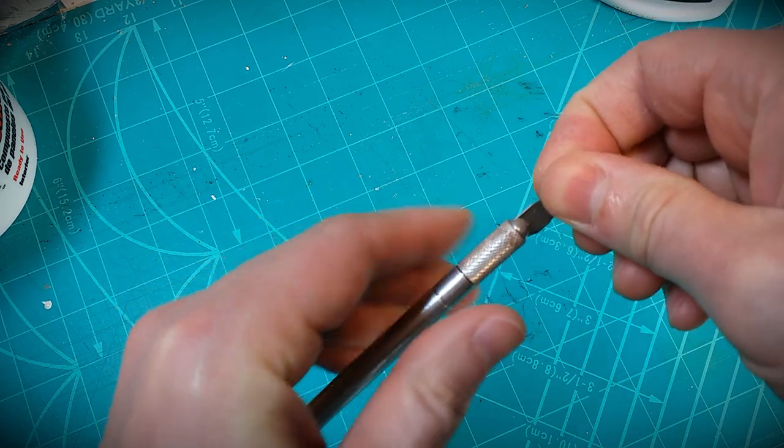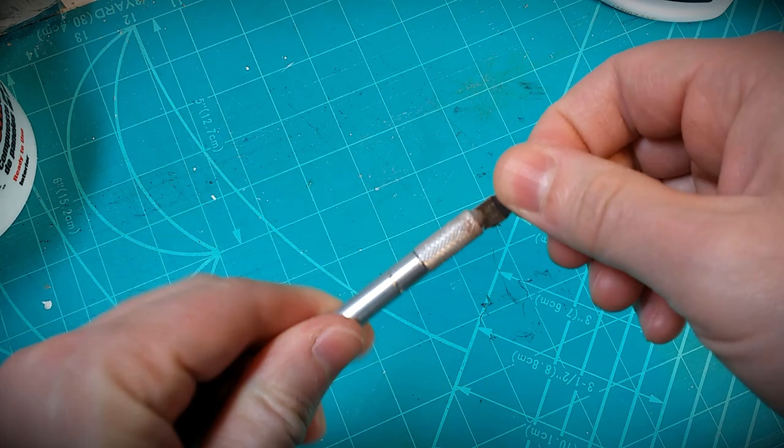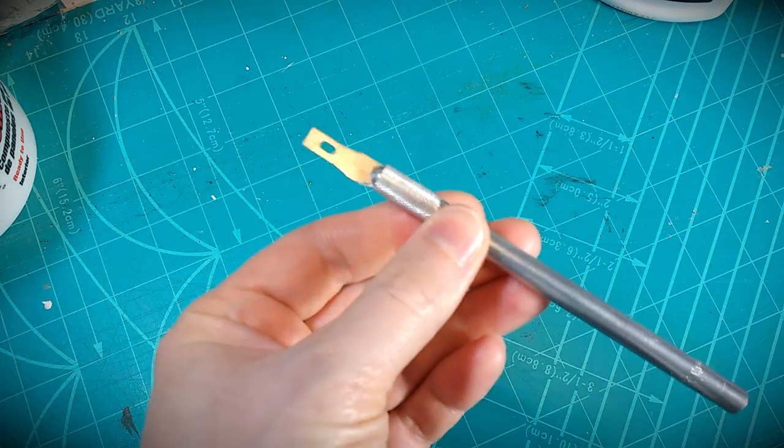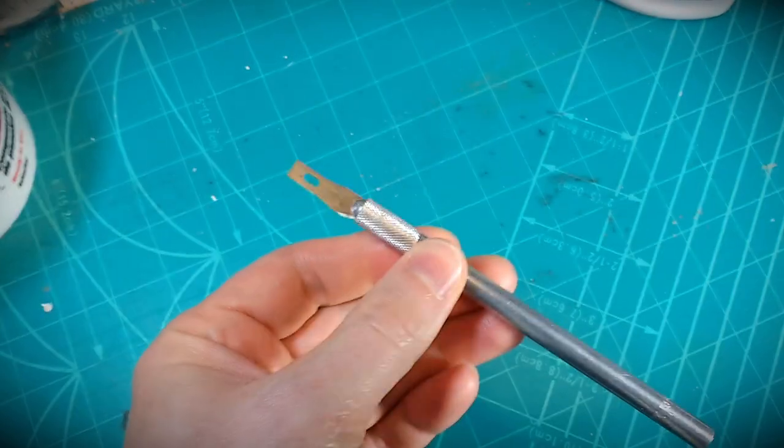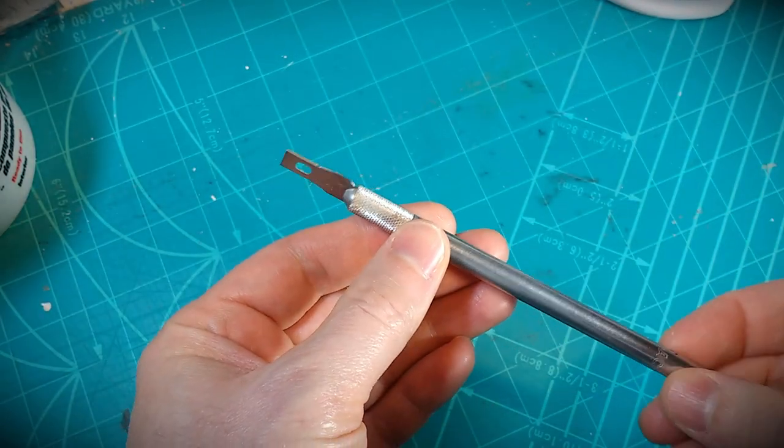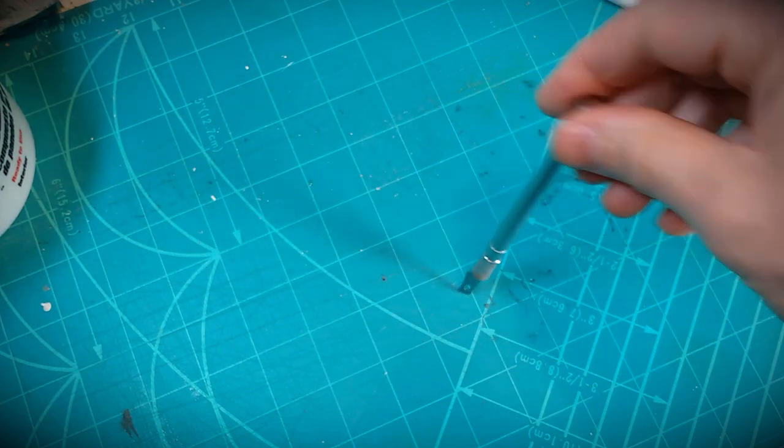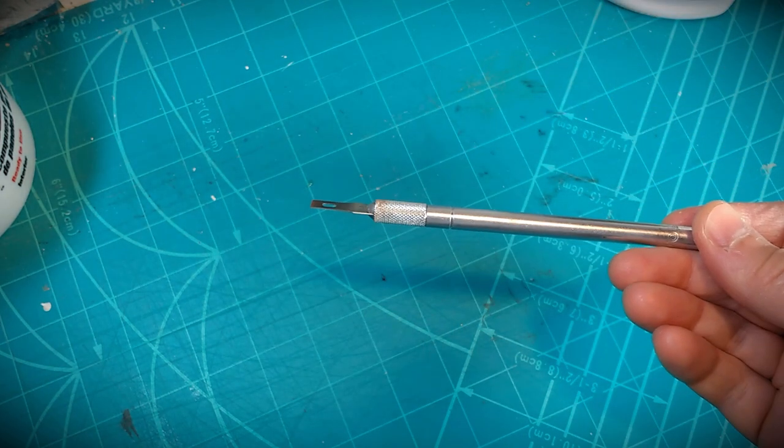If you turn your blade around and insert the tip into the handle, if you're transporting it or even just storing it, there's less chance that you're going to poke yourself on it. There's a little bit of an edge left exposed, but it's a lot safer of a way to handle it and store it.